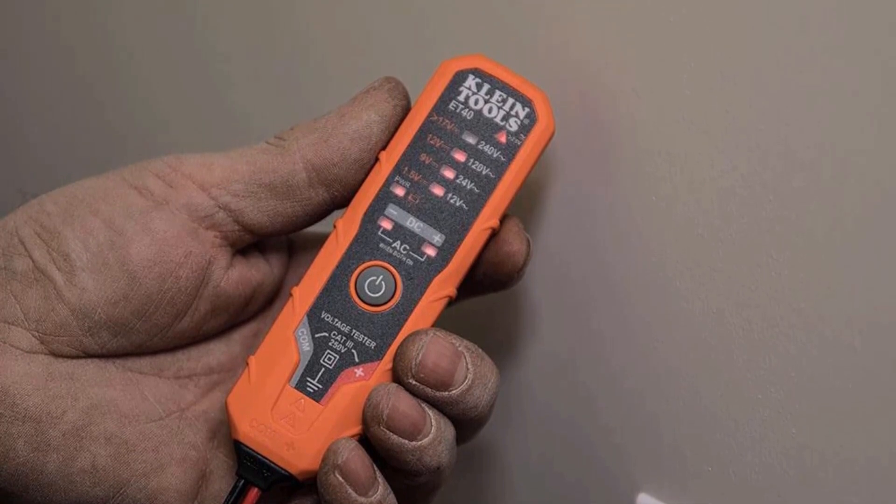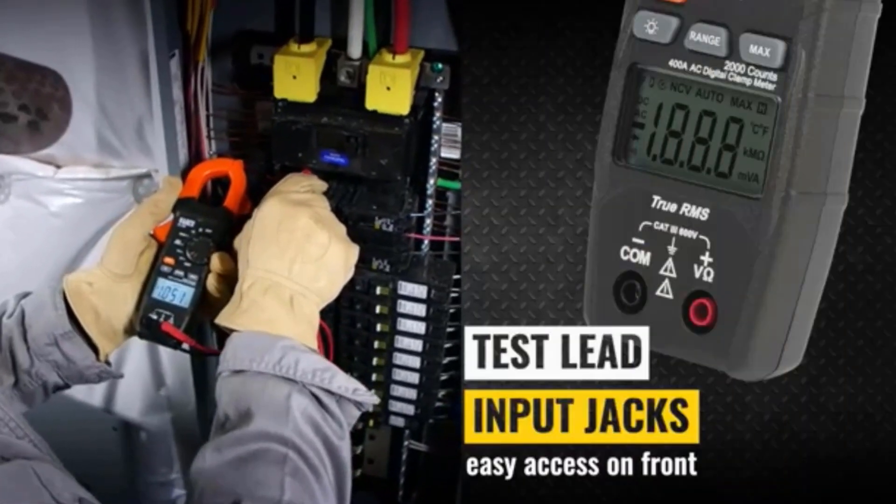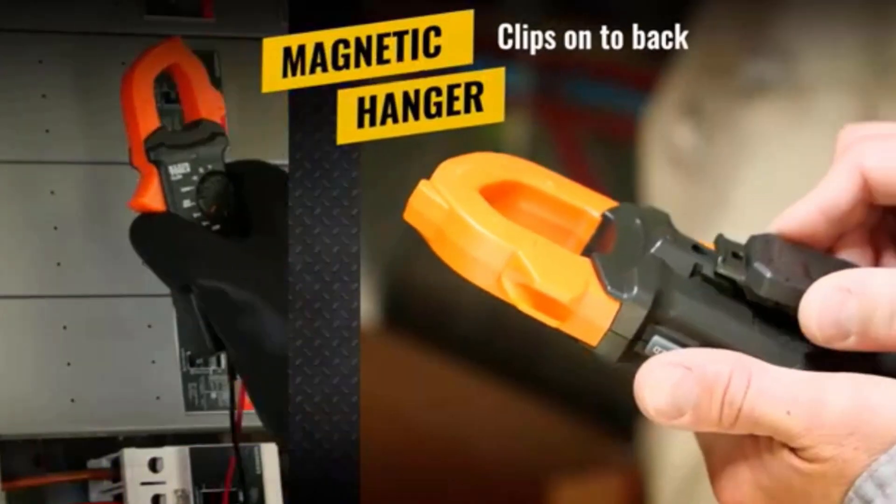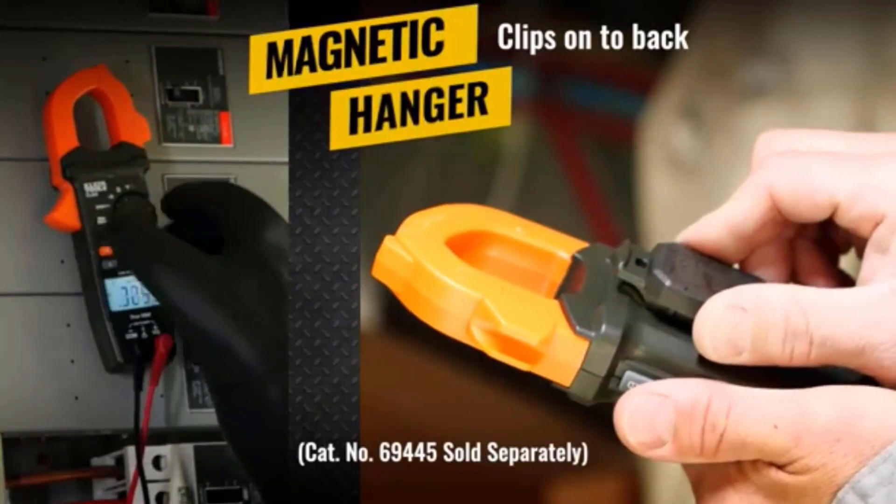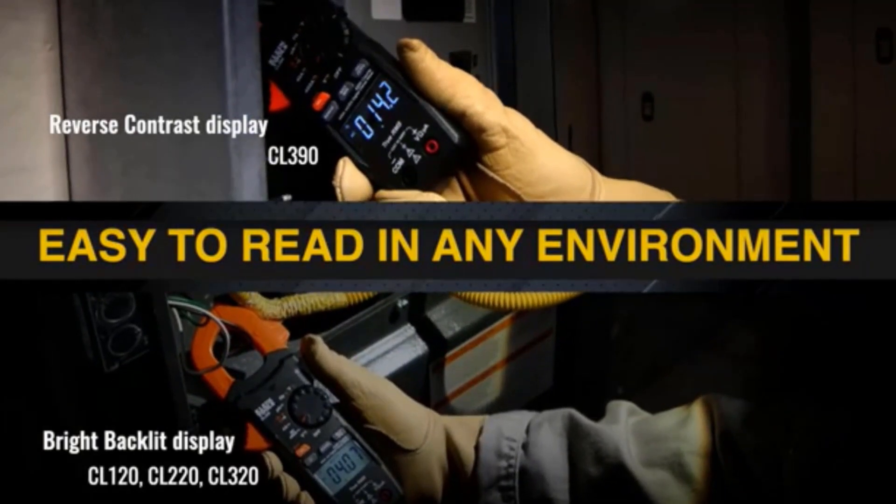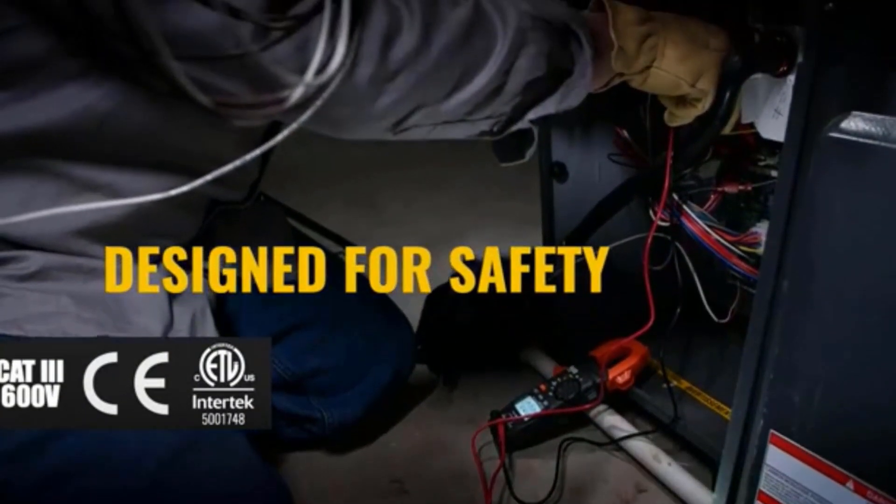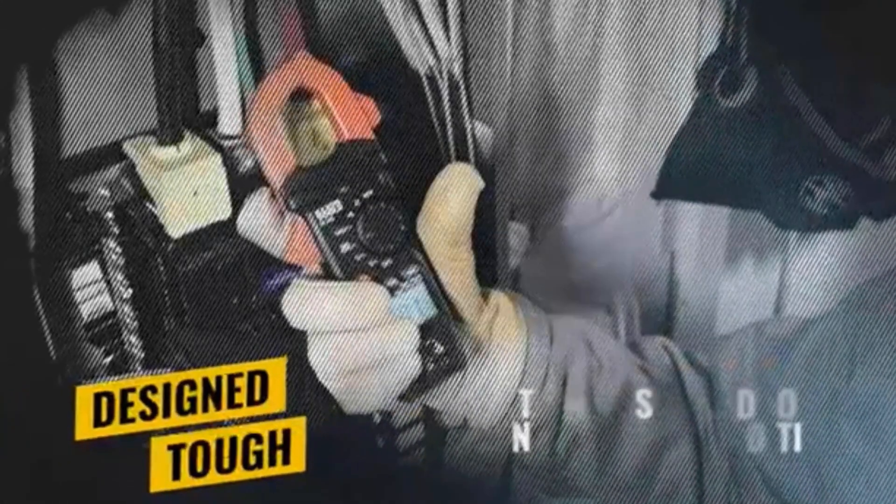Its auto-ranging functionality simplifies usage by automatically selecting the correct measurement range. The CL120VP comes as part of a value pack that includes a carrying case and test leads, offering great utility and portability. Klein Tools backs it with their reputation for quality, making it an indispensable tool for any toolkit.